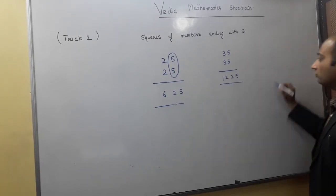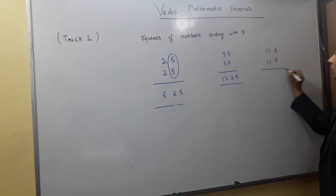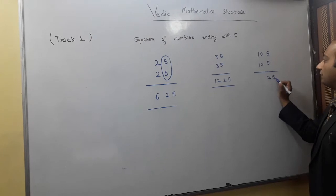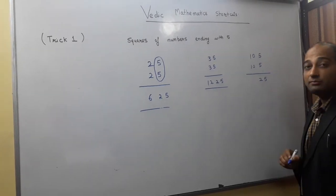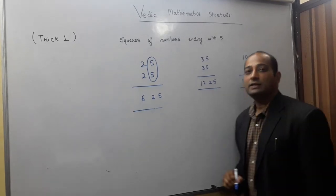If we want to take 105 square, then multiply 5 and 5, which is 25. 10 to next natural number, which is 11, multiply. So we get the result as 11025.